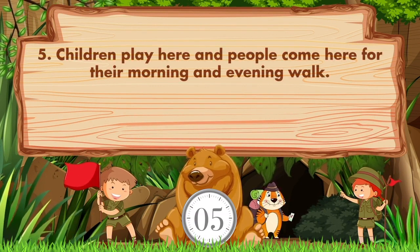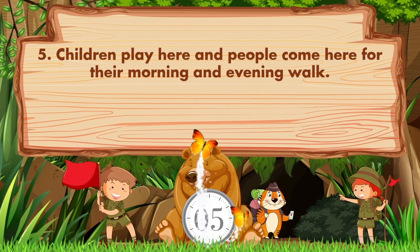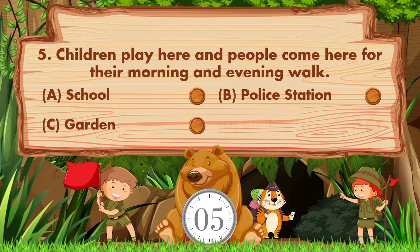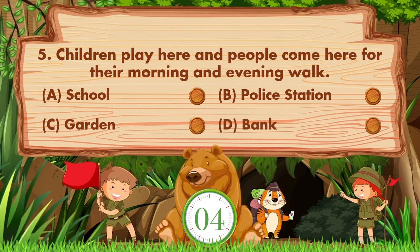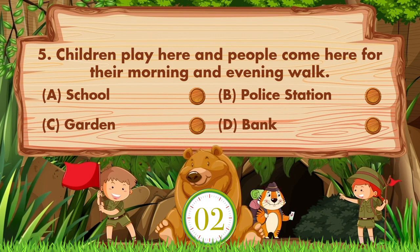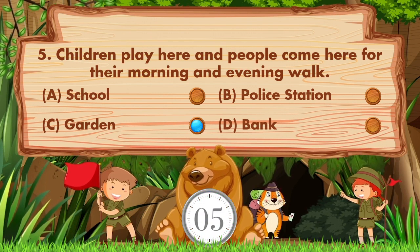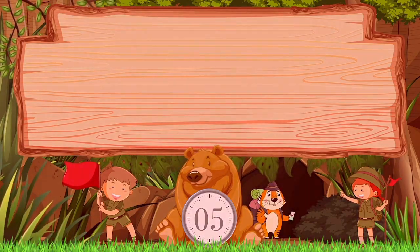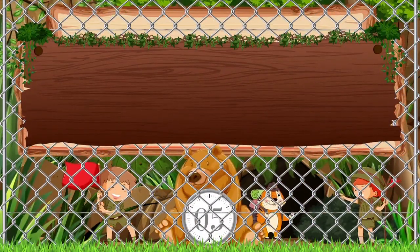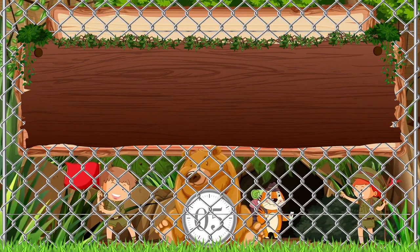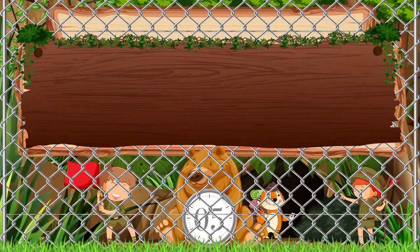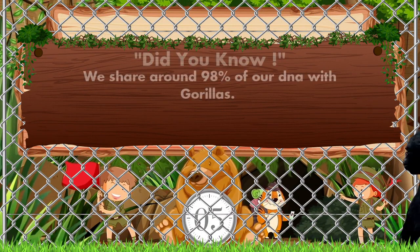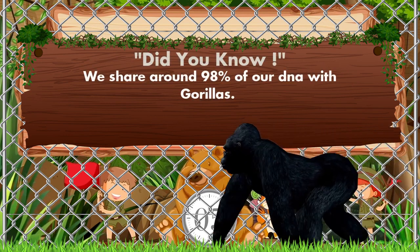Children play here and people come here for their morning and evening walk. Option A school, B police station, C garden, D bank. Answer is option C, garden.